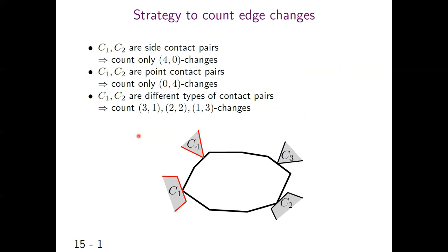The first step is to divide cases of the fixed contact pairs C1 and C2. If both fixed contact pairs are side contact pairs, we only count 4-0 changes. In the 2-2 change figure, we don't count these when C1 and C2 are fixed; we count them when C1 and C4 are fixed. Similarly, we only count 0-4 changes if C1 and C2 are both point contact pairs. In the other cases, edge changes are counted when C1 and C2 are different types of contact pairs.